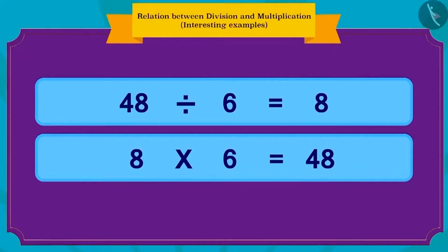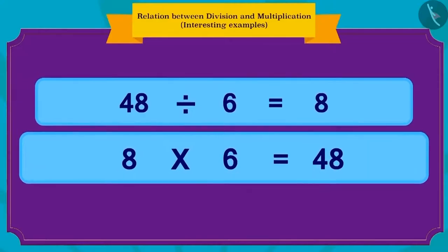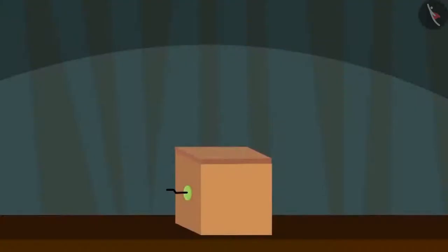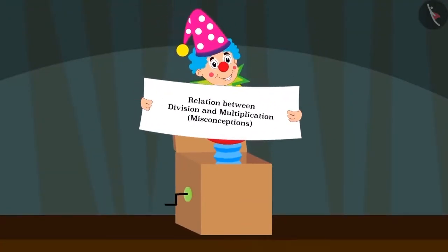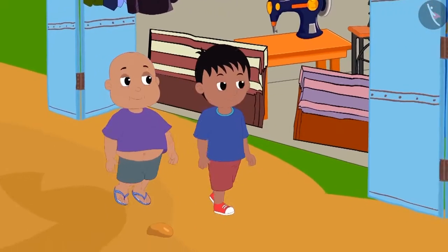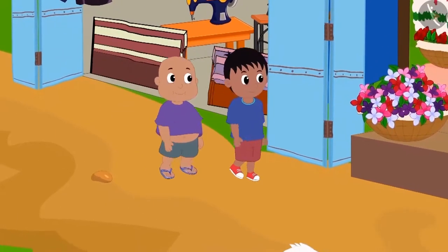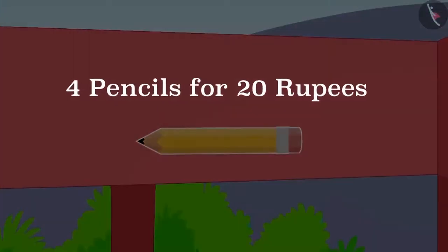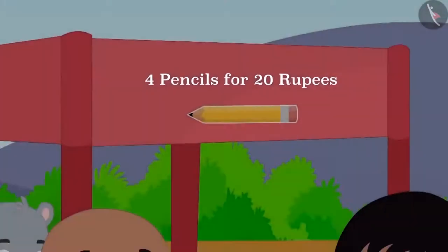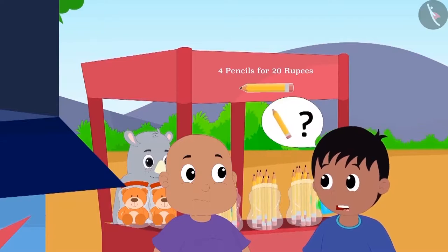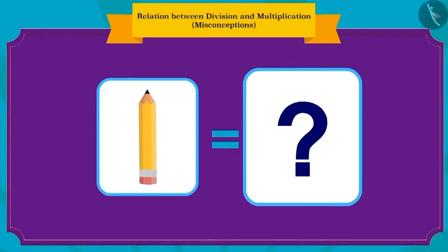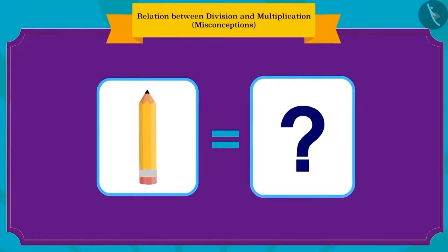Hello children. In the previous video, we saw some interesting examples related to multiplication and division. In this video, we will see some misconceptions around these concepts. Raju and Babalu are out in the market. Raju read what was written on a shop front: four pencils for 20 rupees. He asked Babalu how much they would have to pay if they wanted to buy one pencil. Children, can you tell how much they would need to pay?